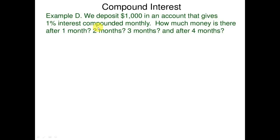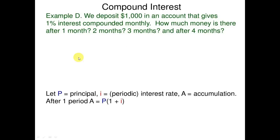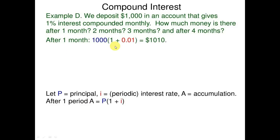Compound interest: we deposit one thousand dollars in an account that gives one percent interest compounded monthly. How much money is there after one, two, three, and four months? Let P equal principal, i equal periodic interest rate, and A equal accumulation after one period. After one month: 1000 into (1 + 0.01) equals 1000 dollars.